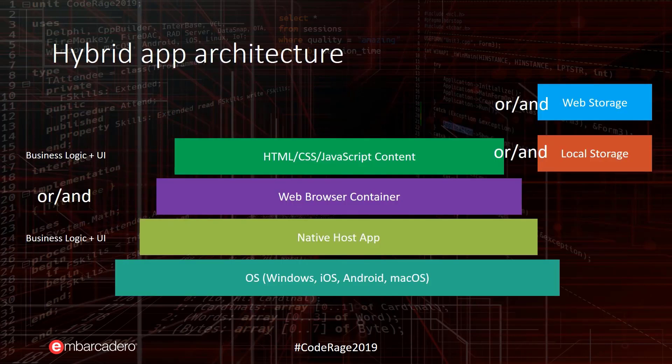Let's talk about what a hybrid application means. I've provided a hybrid architecture diagram. At the bottom we have an operating system. Inside the operating system, we have a started native application — let's call it the native host application. This native host application contains some kind of web browser container, which holds our HTML, CSS, and JavaScript content.